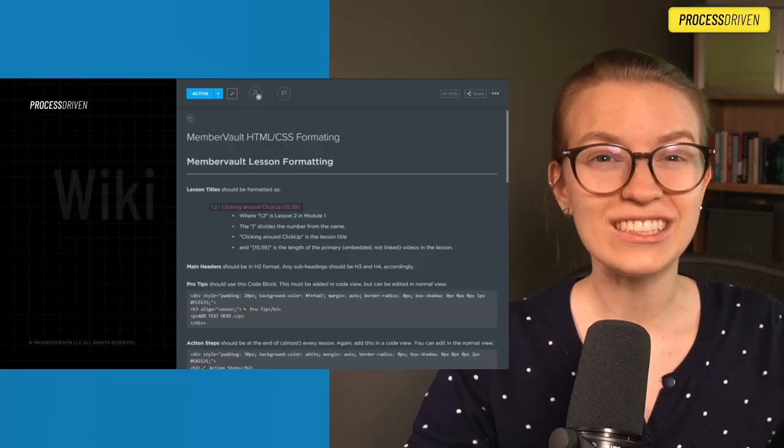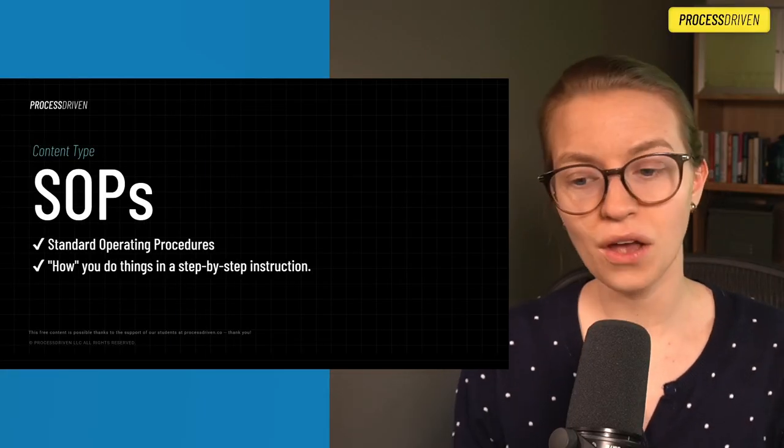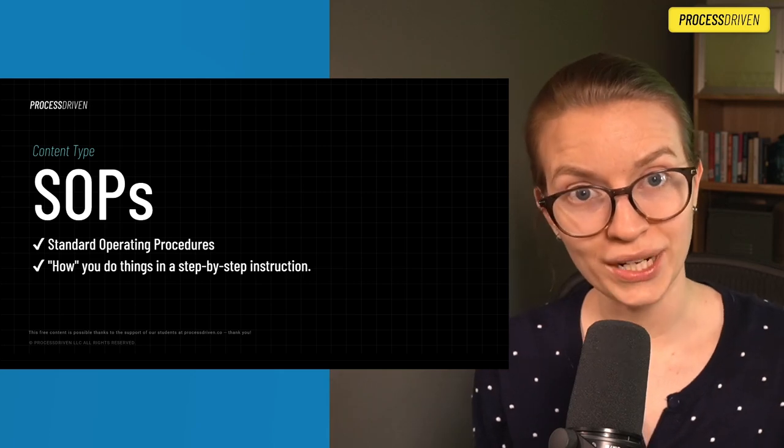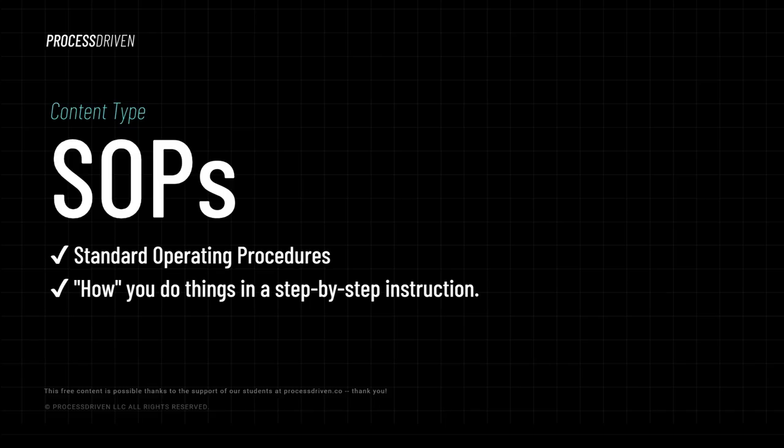Beyond wikis, we get into SOPs — standard operating procedures. SOPs are how you actually do things. The wikis were what you might possibly want to know, whereas SOPs are how you would do whatever it is you need to do. Whereas the wiki might say 'here's all the styling we use for our MemberVault lessons,' the SOP would say 'here's how to create a MemberVault lesson.' The how versus just some general info.